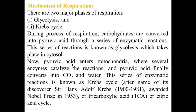Pyruvic acid, a 3-carbon compound, enters the mitochondria where several enzymes and coenzymes catalyze the reactions, and pyruvic acid finally converts into carbon dioxide and water. This number of enzymatic reactions is known as Krebs cycle, named after its discoverer Sir Hans Adolph Krebs, who was awarded the Nobel Prize in 1953 for the finding of Krebs cycle, also known as the tricarboxylic acid cycle or citric acid cycle.